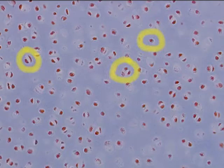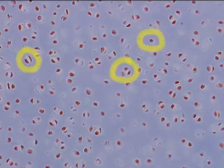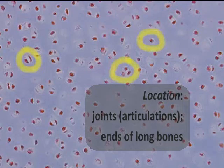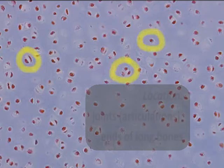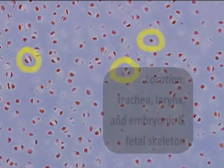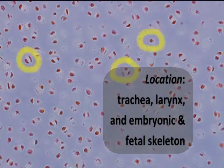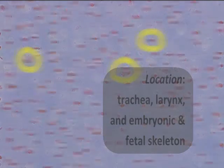Lacunae are little pockets within this jelly-like matrix where the cells can survive, thrive, and carry out maintenance of this tissue. We find hyaline cartilage as the major joint cartilage on the ends of the long bones, as well as around the trachea and the larynx, and in the embryonic and fetal skeletons.